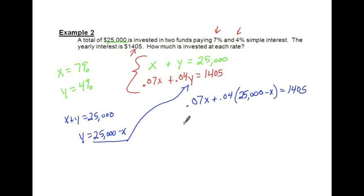Now instead of saying Y, we're going to plug in the 25,000 minus X. And go ahead and finish the rest of that off like that. Now all you have to do is simply just solve that thing for X. So distribute your 0.04, that's 1,000 minus 0.04X equals 1405. Combine your 0.07 and 0.04 to 0.03X.